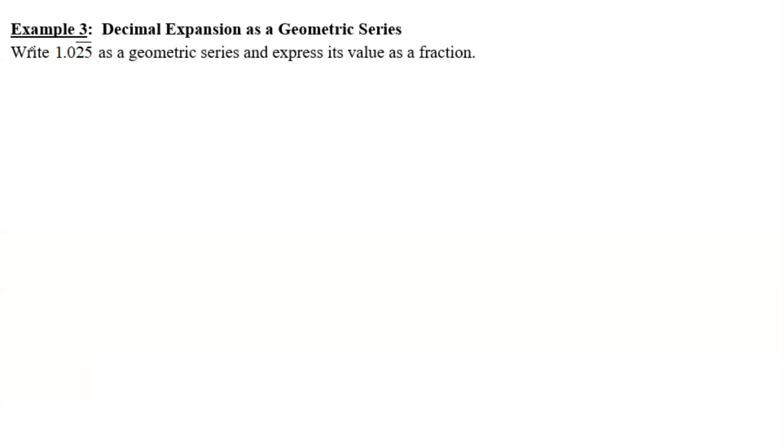I'm not saying that something like this would necessarily appear on the AP exam, but it's a great thing to study nonetheless. It says the directions here are to write 1.025 where the 2.5 has a bar line over it as a geometric series and express its value as a fraction. It's a way that you can write any repeating decimal as a fraction. It doesn't matter how many decimals repeat, you can do it the same technique each time.